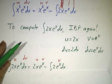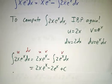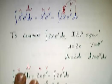Okay? And of course, we know how to integrate 2e to the x. Just get 2e to the x plus a constant. And then we go back up here and say, oh yeah, the answer we wanted was x squared e to the x minus this whole integral down here.